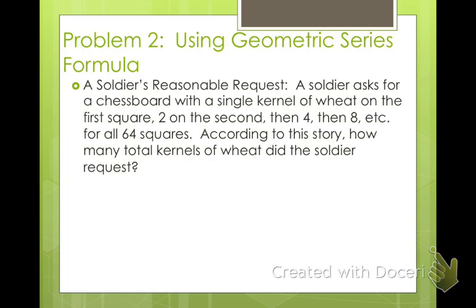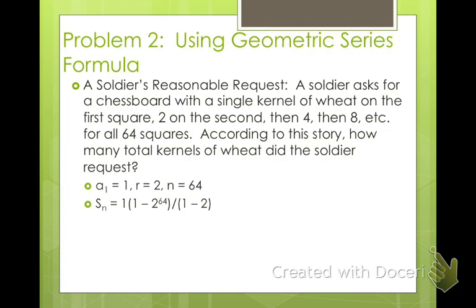Our first term is 1, because he asked for 1, and it's doubling each time — 1, 2, 4, 8 — and there are a total of 64 squares on the chess board. Plugging into our formula: S sub 64 equals 1 times 1 minus 2 raised to the 64th power, divided by 1 minus 2. You can put that in your calculator — make sure you use your parentheses correctly. You should get 2 to the 64th minus 1, which is about 1.875 times 10 to the 19th.